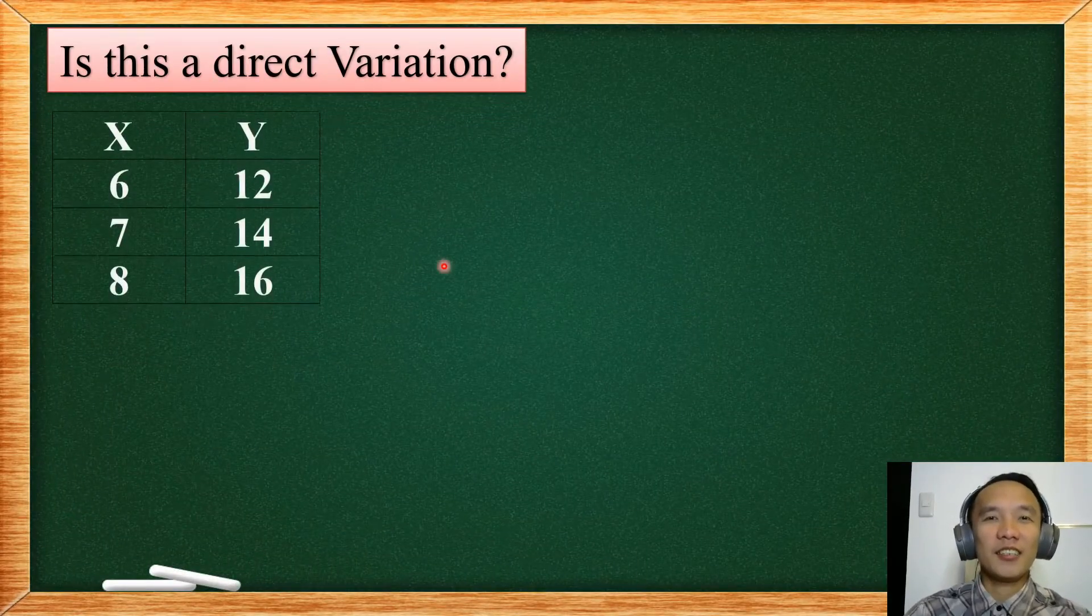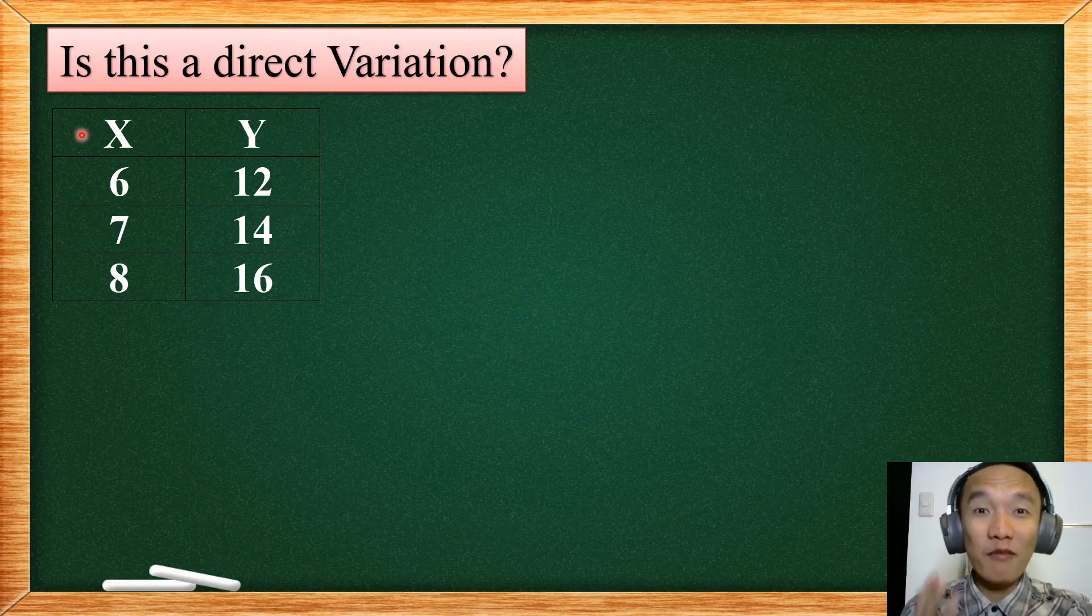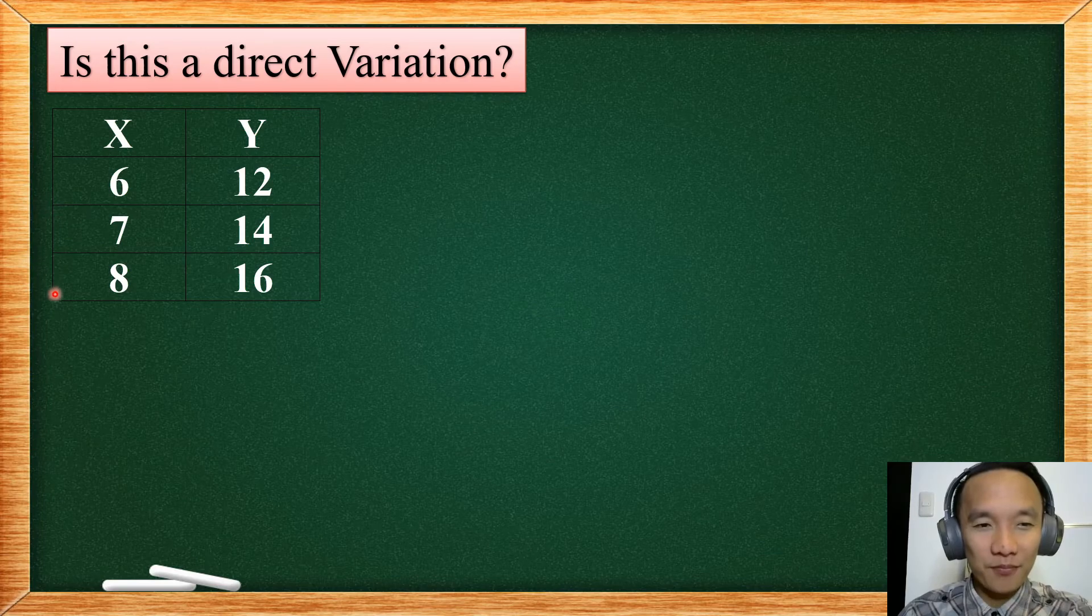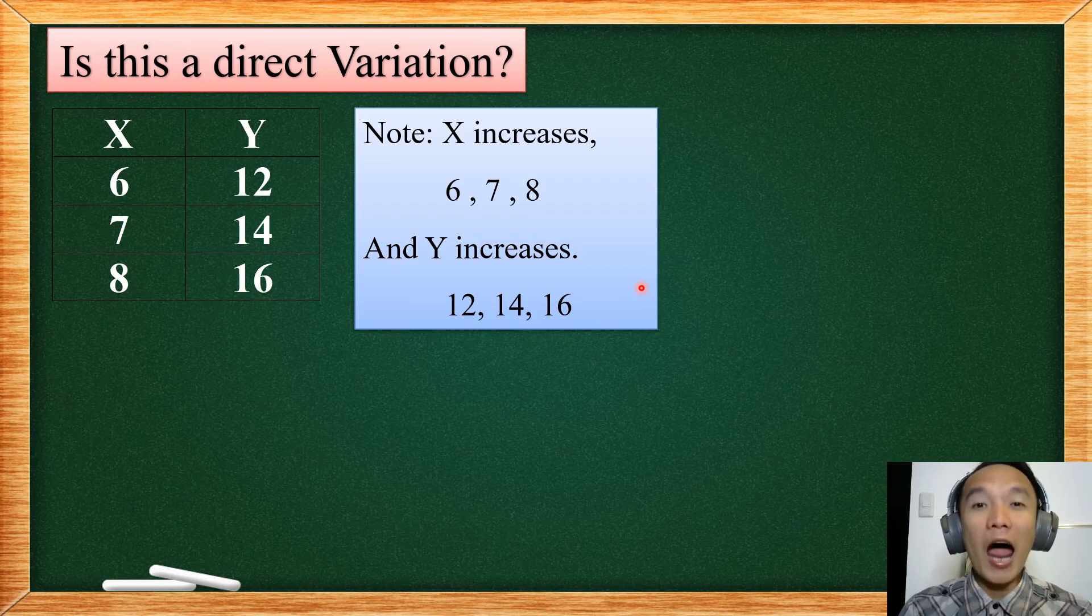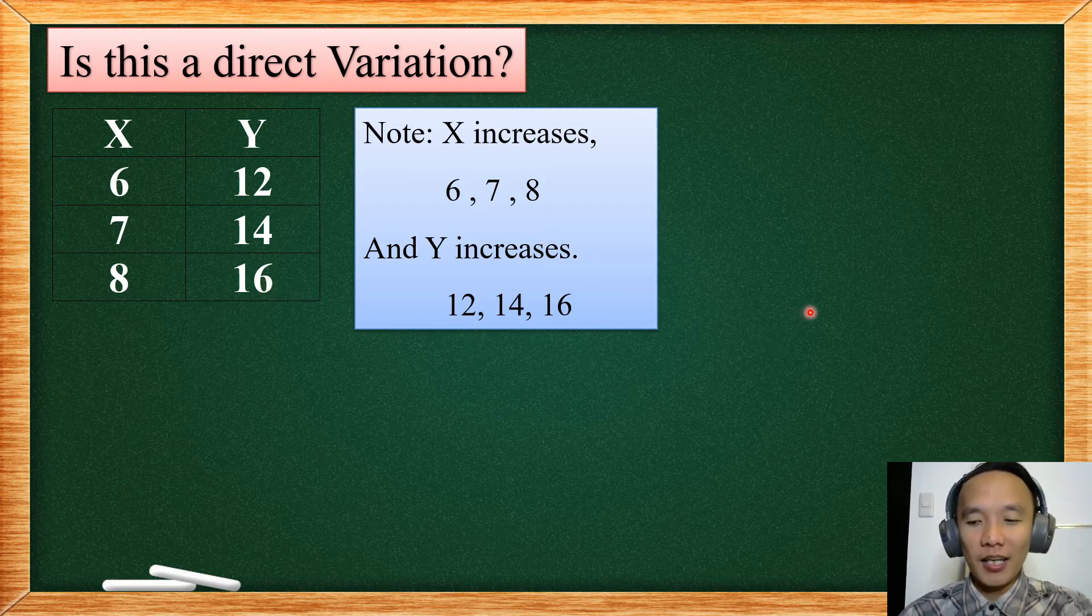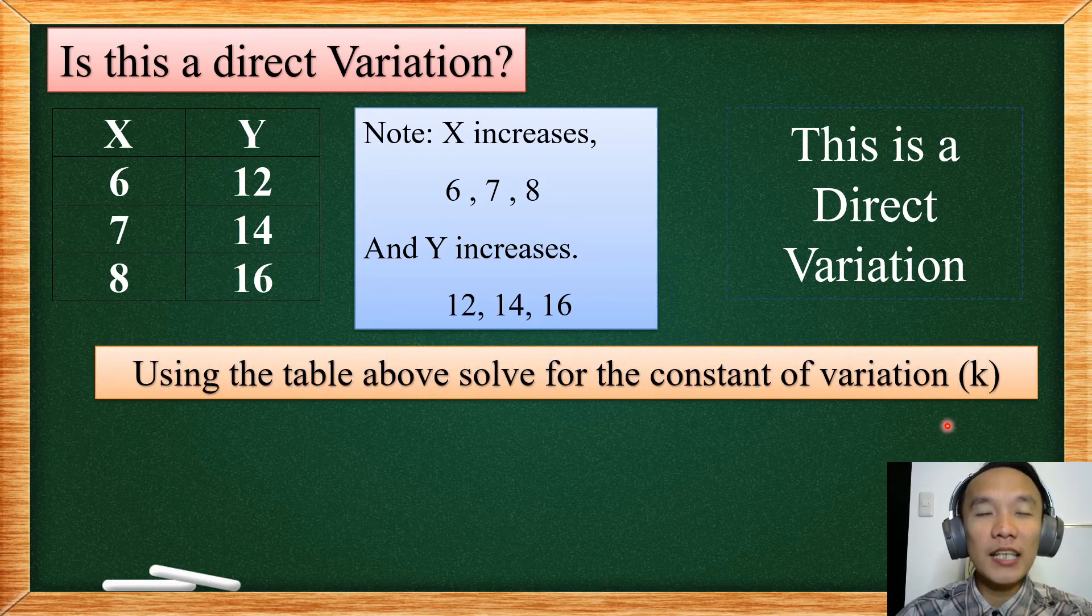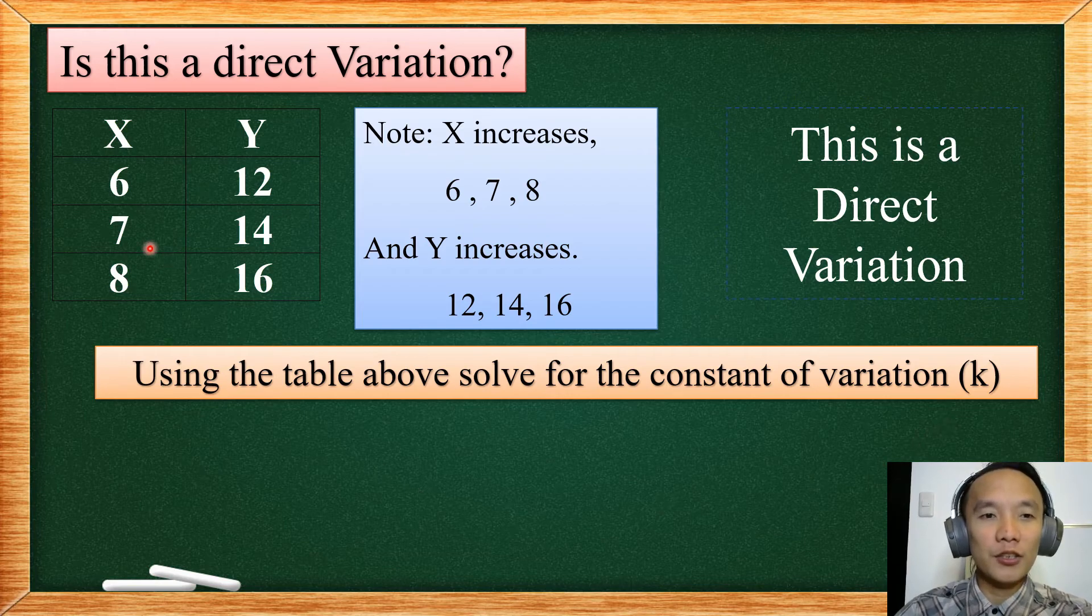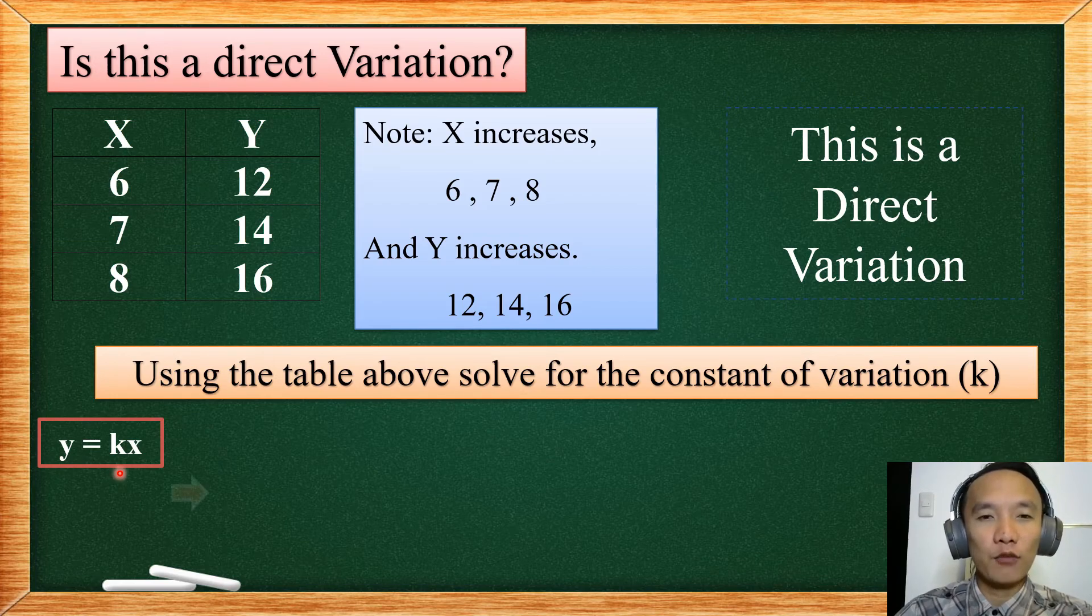Another example. So you have two tables, your X and your Y. As you notice, the value of our X is increasing, and the value of our Y is also increasing. So therefore, from the definition of a direct variation, we can say that this example is a direct variation. Now let us try to solve its constant of variation. Since this is a direct variation, we will have the formula Y equal to KX. So we will find out what is the value of our K.